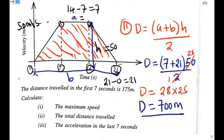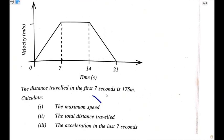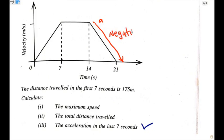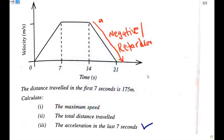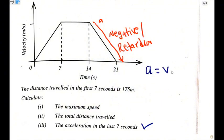Let us move on to our third question. They want you to find the acceleration in the last 7 seconds. The last 7 seconds run from time 14 to time 21 on the graph. This acceleration is going to be a negative acceleration — retardation — meaning the object is decreasing in speed. The formula for finding acceleration is: acceleration equals final velocity minus initial velocity over time.